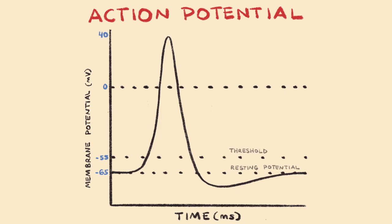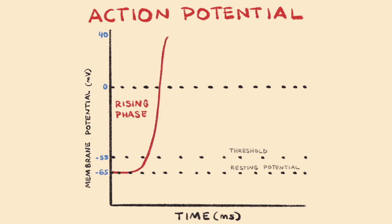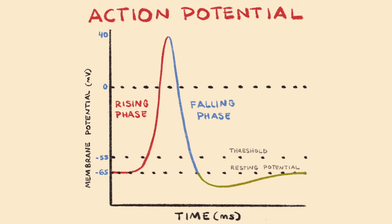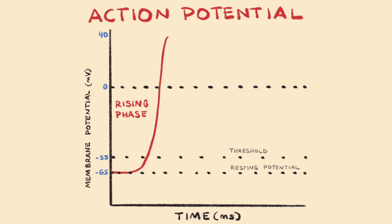An action potential consists of two main parts: the rising phase, or depolarization, and the falling phase, or repolarization. The rising phase includes the parts of the action potential where the inside of the neuron becomes neutral in charge, about 0 millivolts, and then the overshoot, whereby the inside of the neuron becomes increasingly positive in charge.